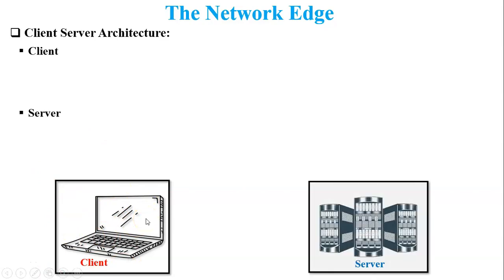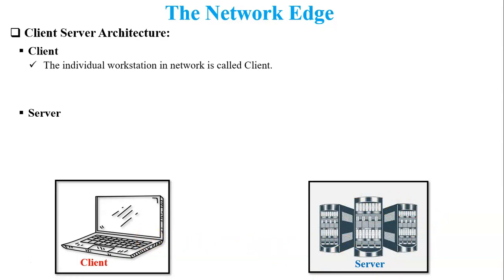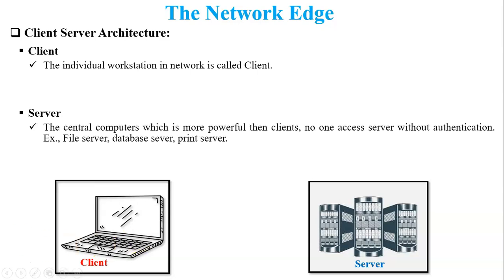Next, client-server architecture. The client is one of the end systems in the network, and the server is also an end system. The definition of client is an individual workstation — it may be a PC or a laptop. A server is a centralized computer which is more powerful than the client because all execution of processes will be done at the server side; the client will only access services from the server. For security purposes, authentication is required so no one can access the server without authentication.